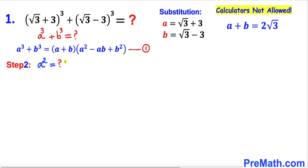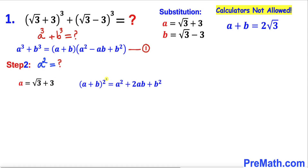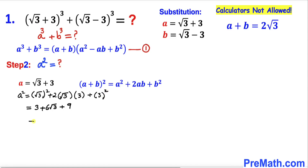In the next step, let's calculate the value of a squared. We know a equals square root of 3 plus 3. Applying the identity (a plus b) whole squared, a squared becomes: square root of 3 whole squared, plus 2 times square root of 3 times 3, plus 3 squared. Simplifying gives us 12 plus 6 times square root of 3. So a squared equals 12 plus 6 root 3.